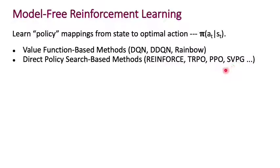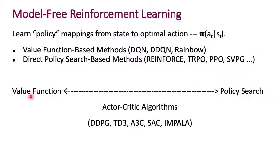We aren't getting into those in detail on the slide, but I want to make more explicit the connection between the term that appeared in the policy gradient and value functions. If you think of value functions and policy search based methods as lying on two ends of the spectrum, actor-critic algorithms represent a class that blends both those worlds and tries to create the best of both.